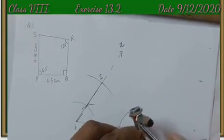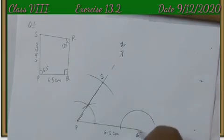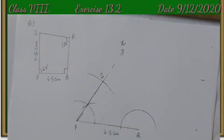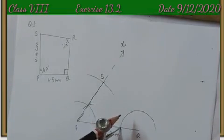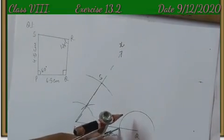Now, we will construct angle Q at 90 degree. 90 degree is a multiple of 15, so we will construct it using compasses.